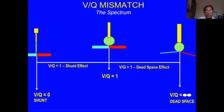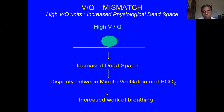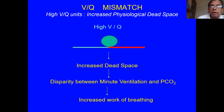When VQ is high, dead space is increased, creating a disparity between minute ventilation and CO2. For example: if minute ventilation is 10 L/min, you'd expect CO2 of 200/10 = 20 mmHg, but it is 40. Either CO2 production is increased or there is a lot of dead space in the lungs. Whatever the cause, the work of breathing is increased, which can lead to respiratory fatigue. High VQ alveoli contribute to dead space, disparity between minute ventilation and PCO2, and increased work of breathing.